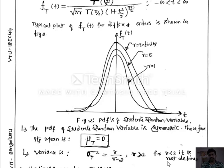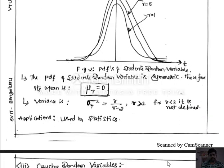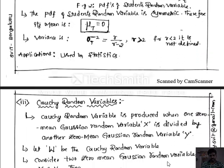The student t random variable is used in statistical applications where the ratio of a normalized Gaussian random variable to a chi-square random variable is required. We will now move on to the next topic: Cauchy's random variable.